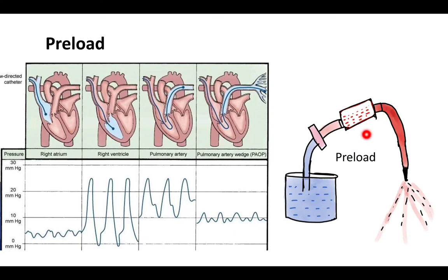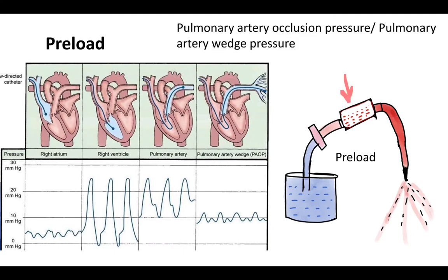Preload refers to the amount of stretch on the left ventricle — or the amount of blood in the left ventricle. To measure it, we would need to access the aorta or pulmonary vein, which are not easily accessible. Instead, we use a pulmonary artery catheter to get an indication of preload.